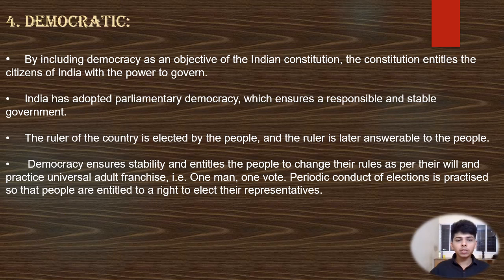Democratic. By including democracy as the objective of the Indian Constitution, the Constitution entitles the citizens of India with the power to govern. India has adopted parliamentary democracy, which ensures a responsible and stable government. The ruler of the country is elected by the people and is later answerable to the people. Democracy ensures stability and entitles the people to change their rules as per their will and practice universal adult franchise — that is, one man, one vote. Periodic conduct of elections is practiced so that people are entitled to a right to elect their representatives.